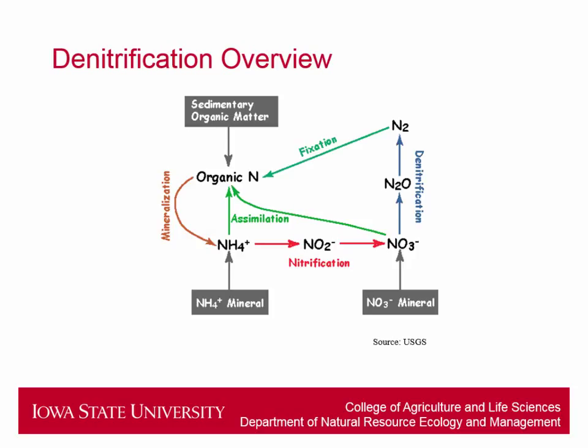My study is looking at denitrification and how much of this nitrate is being removed through microbial denitrification. Just an overview of the nitrogen cycle — my research focuses on the right side of the graph, the process that goes from nitrate to nitrous oxide, and hopefully all the way to dinitrogen gas, which makes up 78% of the atmosphere and is an inert gas.